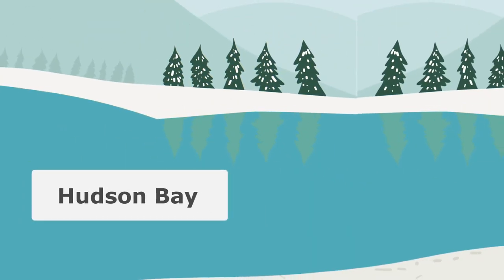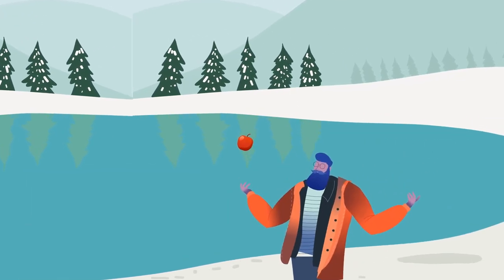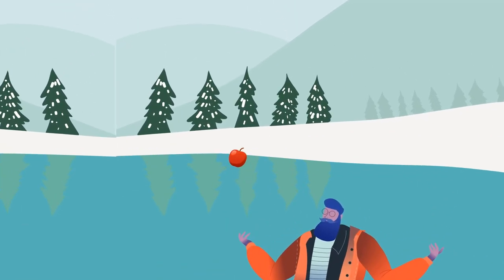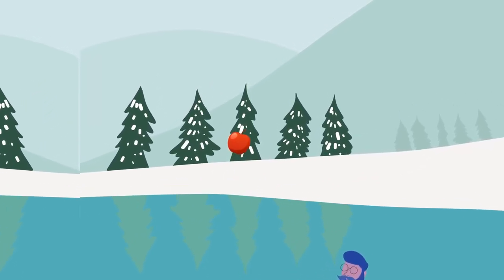For example, Canada's Hudson Bay was found to have lower gravity levels due to massive sheets of ice that dented the Earth 10,000 years ago, literally bending gravity.